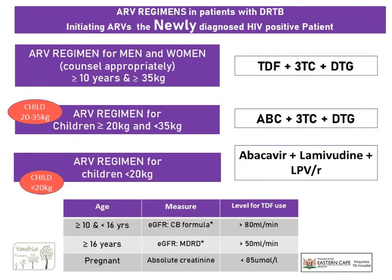Remember that we need to check the renal function for patients initiated on tenofovir. The new ARV guidelines also clarify that the Cockcroft-Gault formula must be used in children between 10 and 16 years of age, and note that we expect the eGFR to be more than 80 mls per minute for our adolescents.